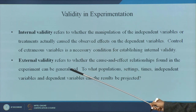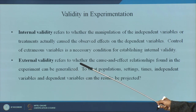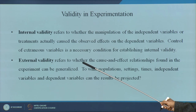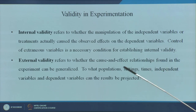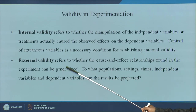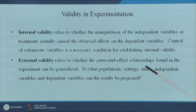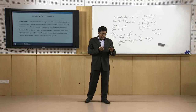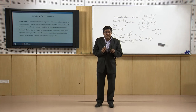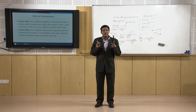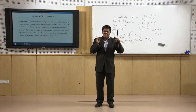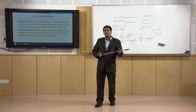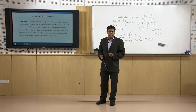External validity means whatever study result has come out should be generalizable. The cause and effect relationships found in the experiment can be generalized to what populations, settings, times, independent variables, and dependent variables. If a study does not have a generalizing ability, there is a lack of external validity. External validity means the results can be utilized or projected for all types of experiments or in the future.